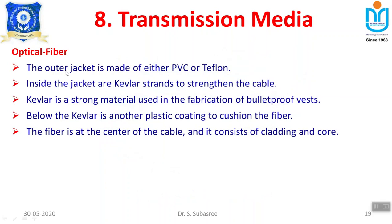The outer jacket of the optical fiber is made of PVC or Teflon. Inside that is a Kevlar strand to strengthen the cable and avoid leakage since light is traveling. Kevlar is a strong material also used for fabricating bulletproof vests, and that same strong material is used for creating the Kevlar strand. Below the Kevlar strand, another plastic coating protects the fiber. At the center of the cable is the core, which is protected by the cladding.